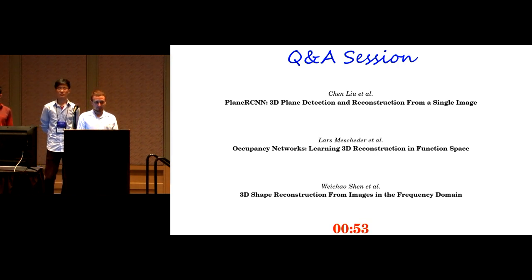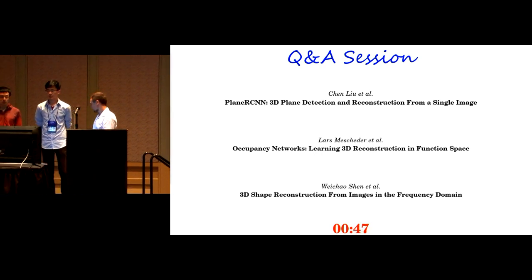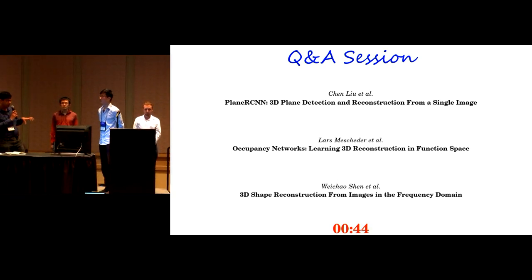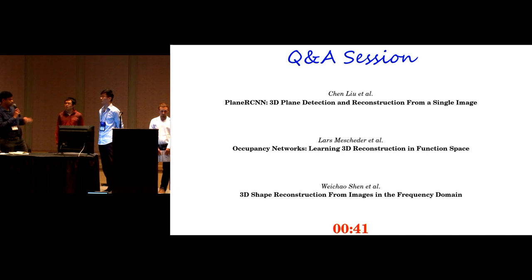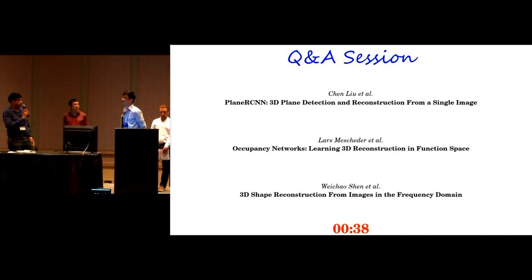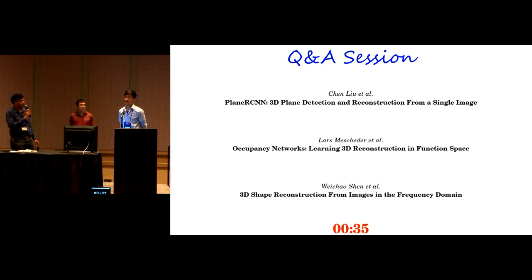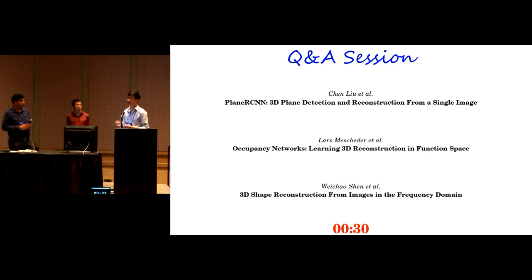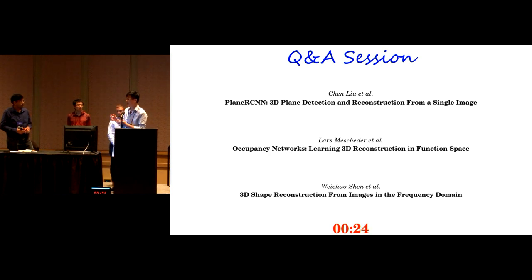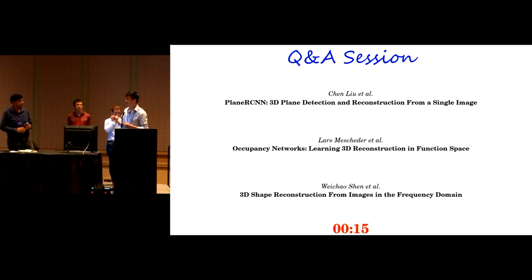Question for the last speaker: you reason in the frequency domain — how easy is it to train these networks given the global dependencies, and how well do they generalize to novel categories? We did not test novel categories. Because we predict the silhouette and thickness map from three views, and the thickness map shares the same geometry structure, we believe this makes it easier to train the network.